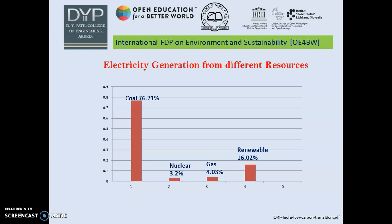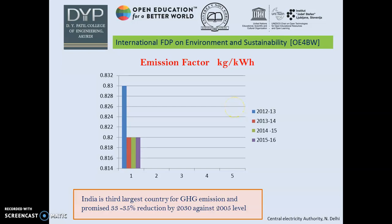In India, electricity generation from different resources is as follows: coal accounts for 76.71 percent, with nuclear, gas, and renewables contributing only 16.02 percent. The emission factor — that is, the amount of CO2 emitted per kilowatt hour — is 0.82 kg per kWh. India is the third largest country for greenhouse gas emissions, and by signing the Paris Agreement, it has promised to reduce emissions by 33 to 35 percent of GDP by 2030 against 2005 levels.